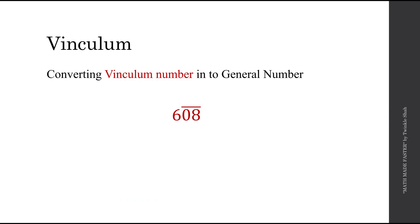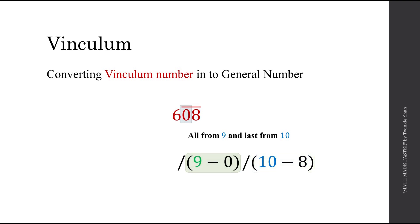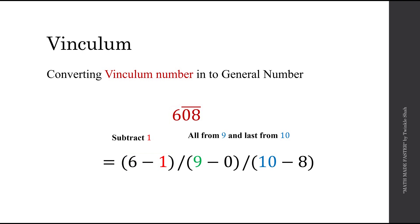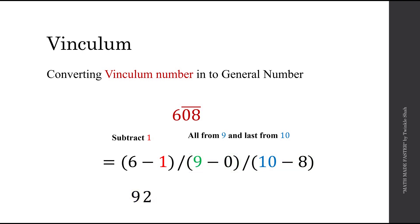Let's do another example. We apply the same technique — all from 9 and last from 10. We subtract 8 from 10, 0 from 9, and subtract 1 from the previous digit, giving 6 minus 1. Simplifying: 10 minus 8 equals 2, 9 minus 0 equals 9, and 6 minus 1 equals 5. And that's our answer.